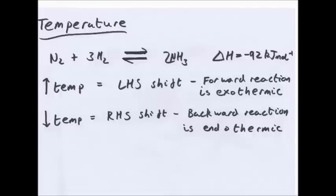And if you decrease temperature the opposite happens. So less energy is being given in, so they're going to want to give off more energy. So it goes to the exothermic side, the forward reaction, the right-hand side. So if temperature is decreased there's a right-hand side shift of equilibrium position because the backward reaction is endothermic. You can say the forward reaction is exothermic. Both give valid reasons.